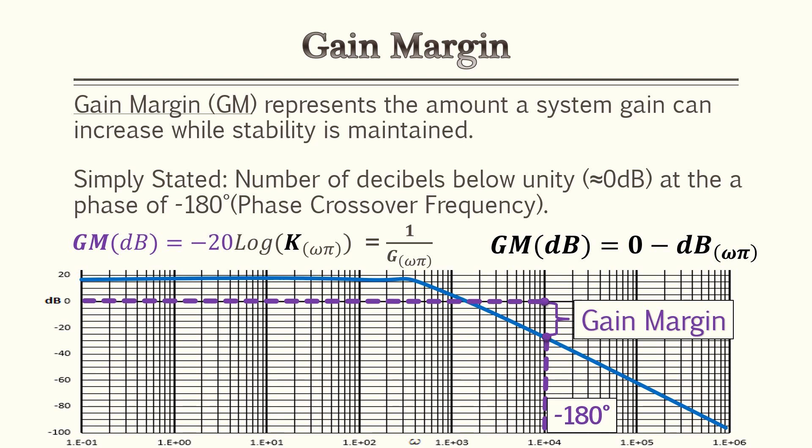I've provided the textbook equations as well as the simplified equation. To find the gain margin, it's going to be zero minus the amount of decibels at negative 180 degrees. You're going to need your phase response Bode plot as well as your frequency response Bode plot next to each other, so you can draw your lines to understand where your gain margin is.